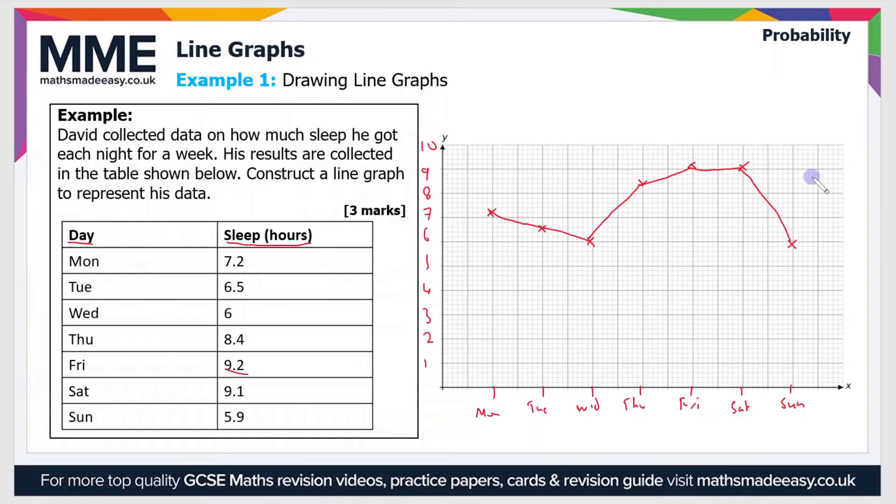Now our graph is almost complete. We're just missing a couple of things. First of all, we need a title for our graph. Let's just say that this is amount of sleep over one week. That's a perfectly suitable title because it expresses everything that the graph encapsulates.